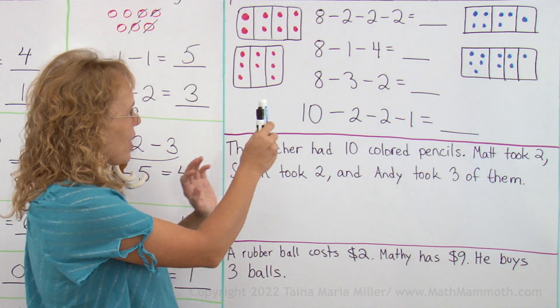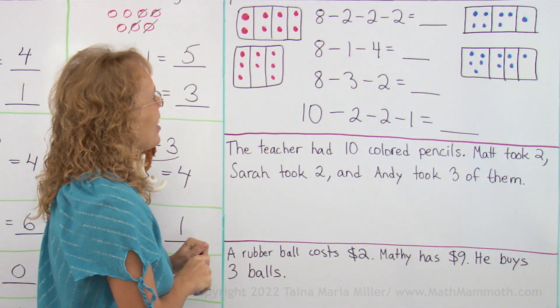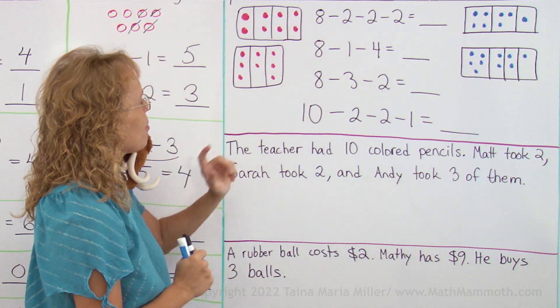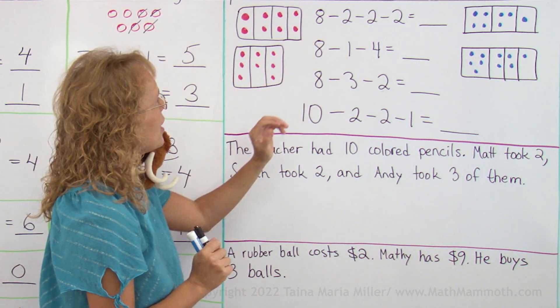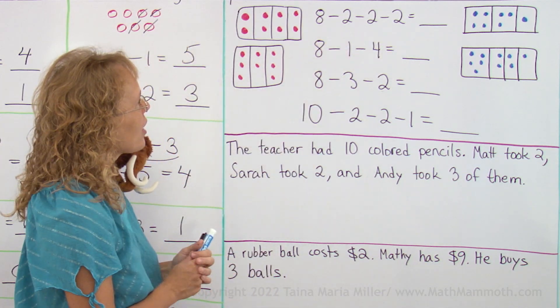Now here, we need to match these subtraction problems to the right pictures. So there's 8 minus something, 8 minus something, 8 minus something, 10 minus something. 8 minus 2 minus 2 minus 2, okay.